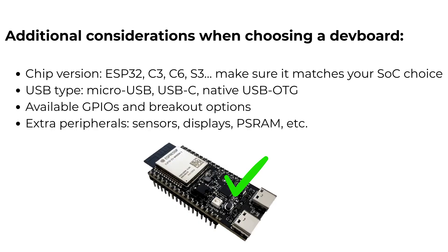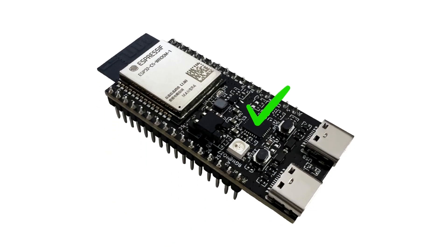Additional considerations when choosing a dev board: chip version — ESP32, ESP32-C3, C6, S3, H — make sure it matches your SoC choice; USB type — micro USB, USB-C, or native USB OTG; available GPIOs and breakout options; and onboard peripherals like sensors, displays and more. The official dev kits are designed for quick prototyping and reliable performance, and they are continuously updated with the latest chip versions.